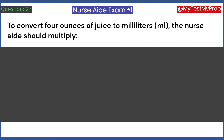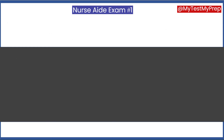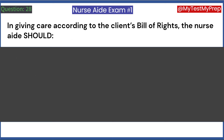To convert 4 ounces of juice to milliliters (ml), the nurse aide should multiply: A. 4 by 5 milliliters. B. 4 by 10 milliliters. C. 4 by 15 milliliters. D. 4 by 30 milliliters. Answer: D. 4 by 30 milliliters.